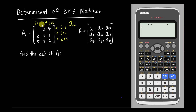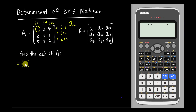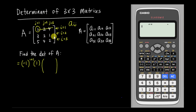Using the first row, I start with the number 1. I eliminate the first row and first column, leaving the values 2, 1, 4, 2 — this is called the minor. To find the cofactor of the first element, I write negative 1 to the power of the position (1+1), multiply by the element value 1, then multiply by the minor matrix [2, 1; 4, 2].